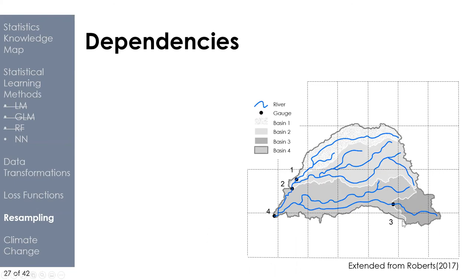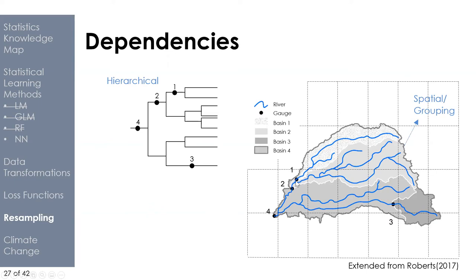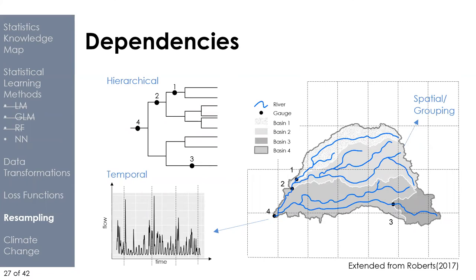What do I mean by dependencies? We have gauges on a river network. First, gauges exist in space — gauges closer together should exhibit more similar behavior. There's also a hierarchical component because we have a network: two gauges may be close, but because they fall on two sides of a watershed divide, the hydrology feeding those gauges can be very different. And there's temporal autocorrelation — if I know the flow in my river this month, I have a better chance of predicting it next month because of this time dependency.